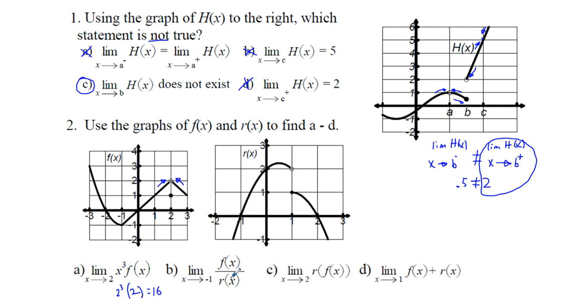B, the limit as x approaches negative 1 of f of x over r of x. Well, negative 1 looks like for f of x, we have negative 1, and then as r of x, if we approach negative 1, we have 0. So we have negative 1 divided by 0. So that's going to be undefined, since division by 0 is not defined.